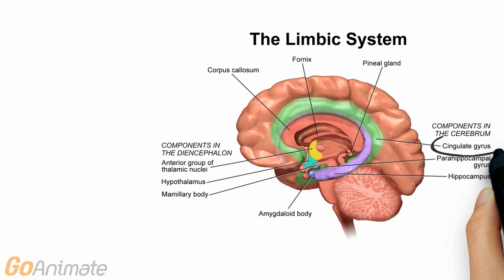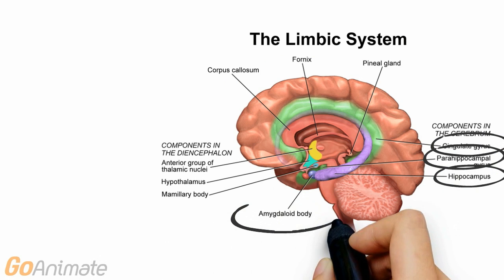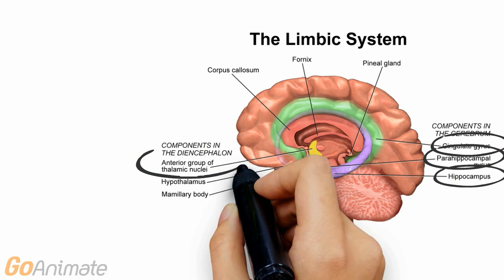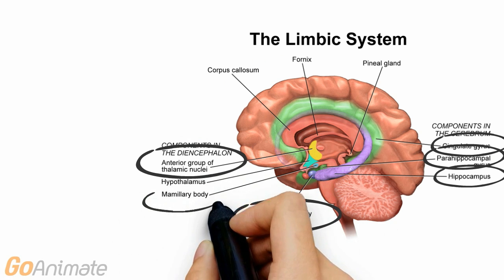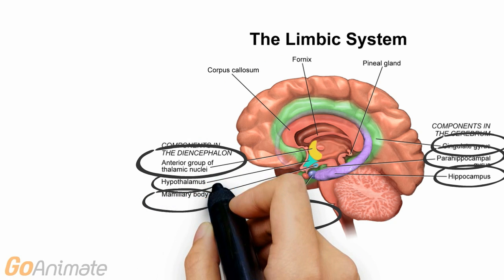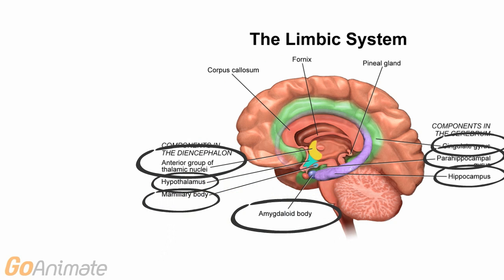The limbic system processes emotions. It includes the cingulate gyrus, parahippocampal gyrus, hippocampus, amygdaloid body, mammillary body, and parts of the thalamus and hypothalamus.